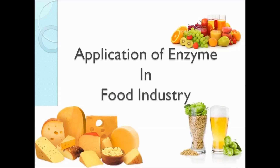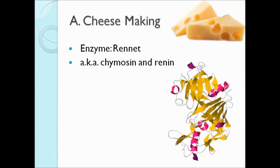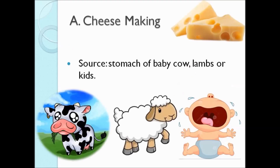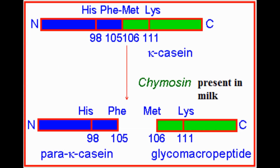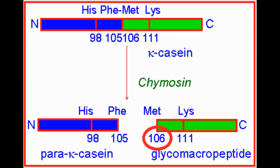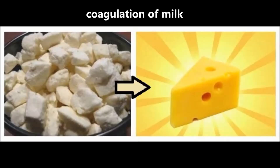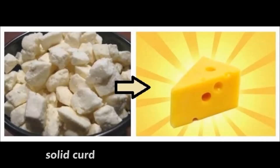Application of Enzyme in Food Industry: Renin, also known as chymosin or rennin, can be obtained from the stomach of young calves, lambs, or kids. Renin is a kind of protease which cleaves the peptide bond between phenylalanine-105 and methionine-106 in k-casein, which is present in milk. This cleavage leads to coagulation of milk, forming a solid curd from which cheese is made.